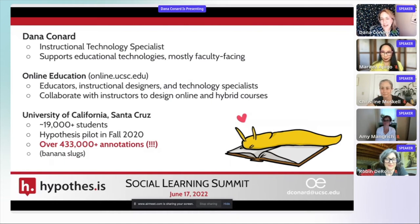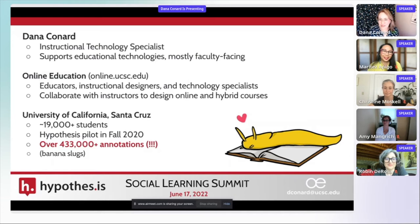Our unit also works closely with our Center for Innovations in Teaching and Learning, so we were a nice double team of pedagogy-informed decisions and assisting instructors with the technological aspects of implementing what they wanted to do in their classroom. A bit about UCSC: we're a pretty big school, and we were the first UC school to adopt Hypothesis — my personal badge of honor — in fall 2020. Our mascot is the banana slug, which hopefully explains the image at the bottom right of this slide.